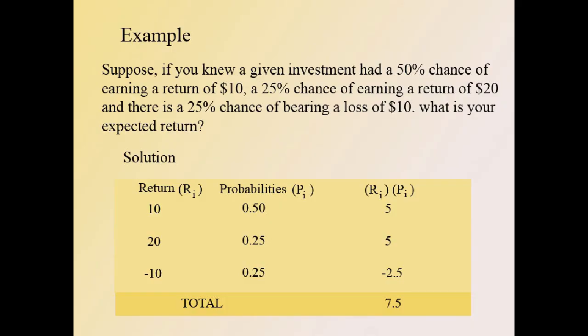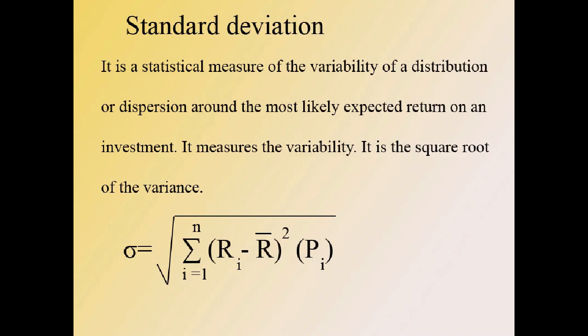Here is an example. Suppose an investment has a 50% chance of earning a return of $10, a 25% chance of earning $20, and a 25% chance of a loss of $10. We multiply each return by its probability and sum the results (ri × pi). The total of these figures is the expected return of the investment.